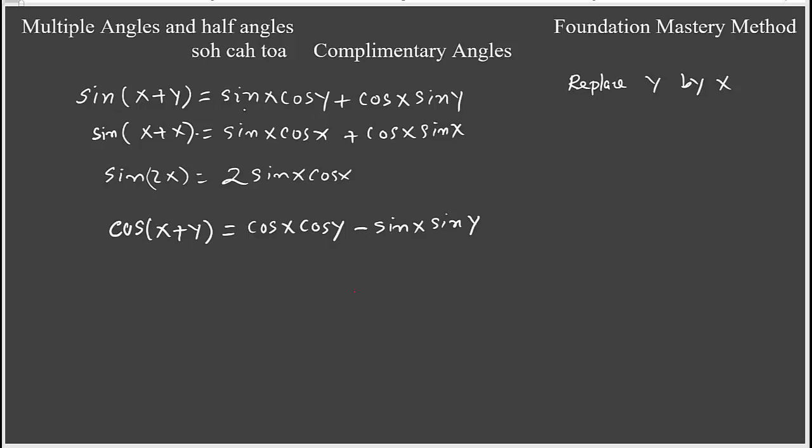In sine function sine cosine comes together and they switch their angles here. But for cosine, cosine cosine stays together, sine sine together. So now when I replace y by x I get here cosine 2x and the other side you get cosine x cosine x minus sine x sine x, which can be written as cosine squared x minus sine squared x. This is one form.